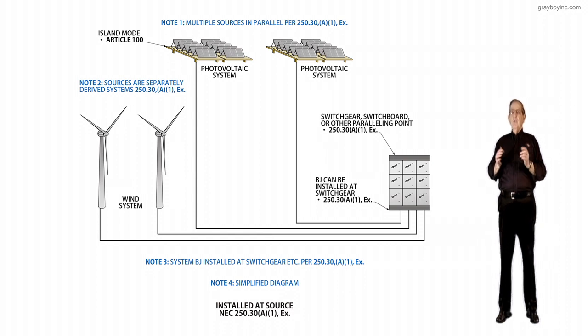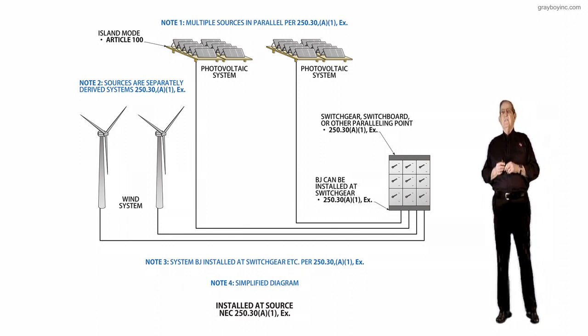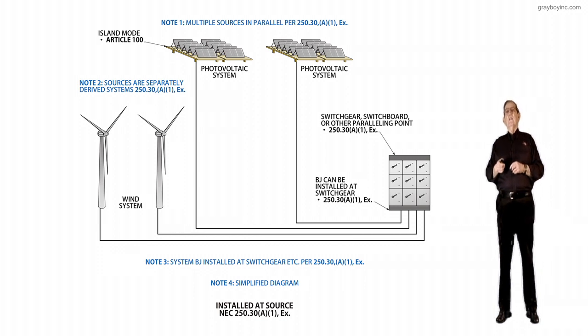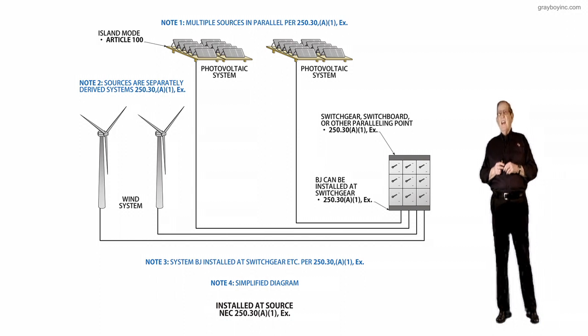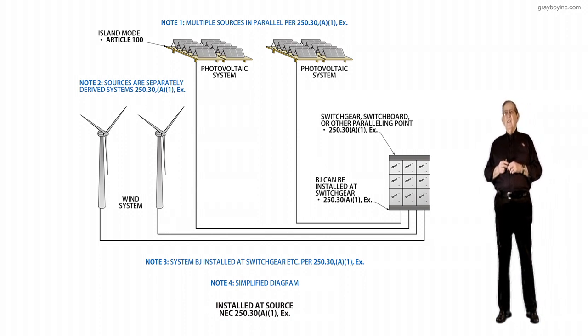So we have two things we look at there. What type of equipment is it, and then where would we place the bonding jumper and connect it? And then notice also we have our PV systems as shown in the illustration. And of course, if you have any type of secondary ties, you would need to go to 450.6 in the NEC.